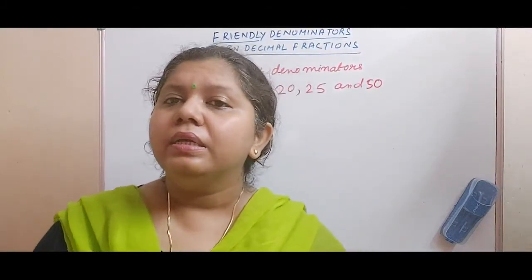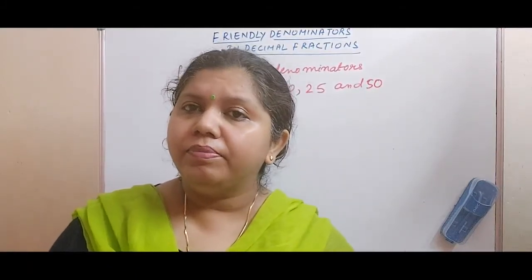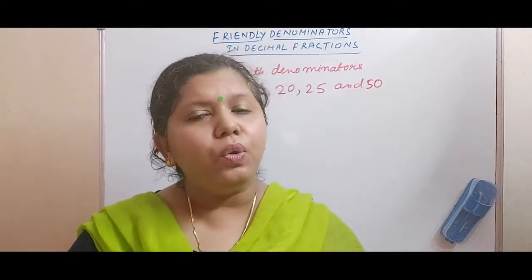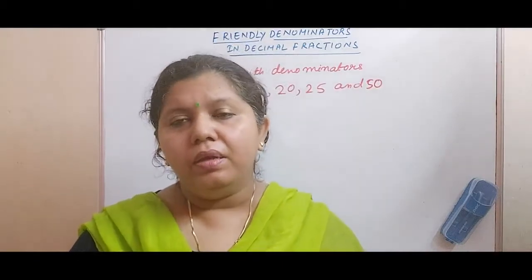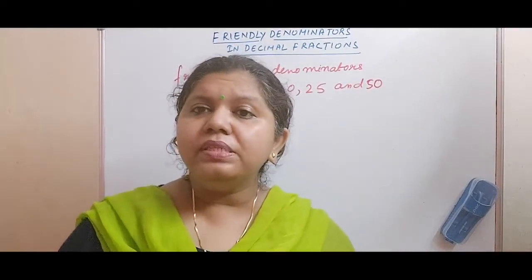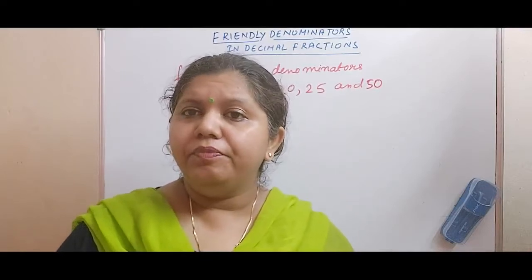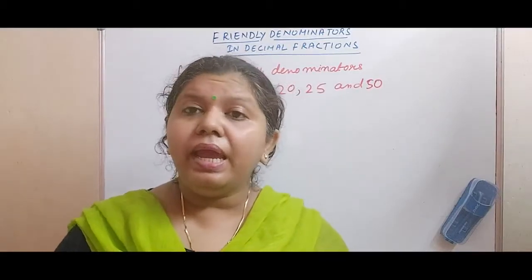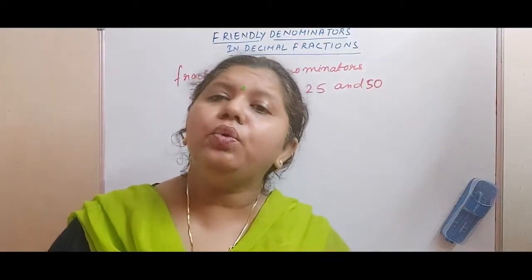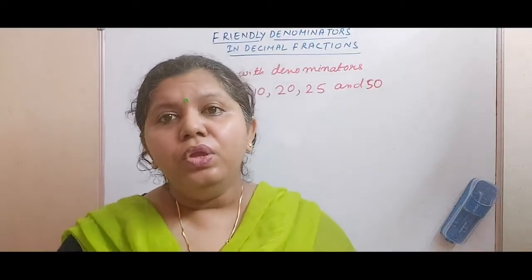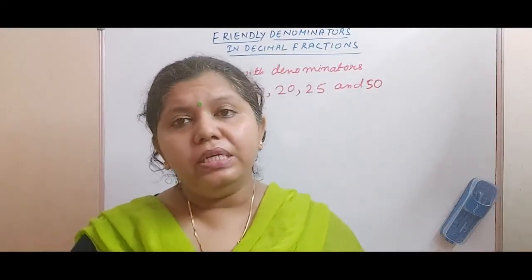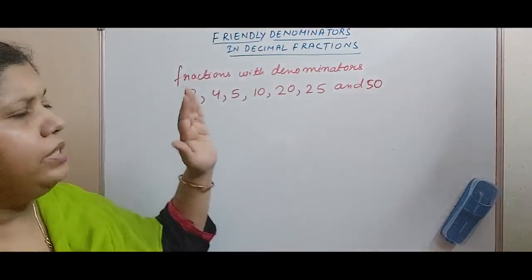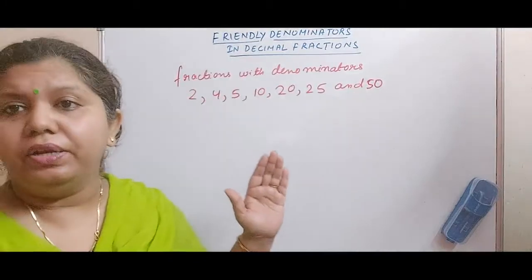We already know that decimal fractions are having the denominators as 10, 100, 1000, 10,000 or any power of 10. Now there should be some denominators which are not any of them, like not 10, 100 or 1000, but they can be easily converted into 10, 100, 1000 or any power of 10. So such kind of denominators that can be easily converted to 10, 100 or 1000, they are called friendly denominators.